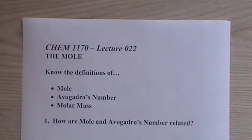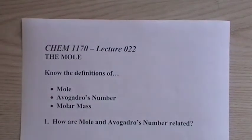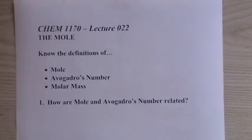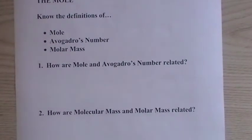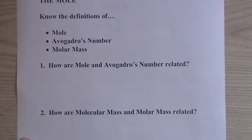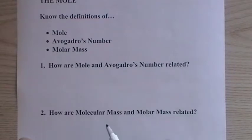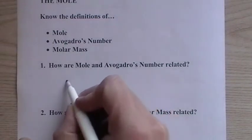Okay, lecture 22. Got a lot of stuff to do here. Gonna move pretty quickly. So the first question is, how are mole and Avogadro's number related?